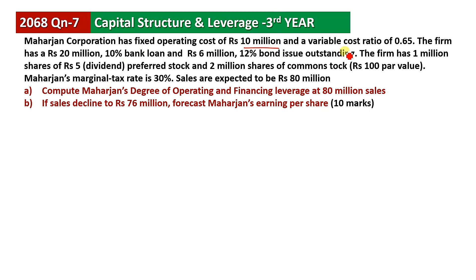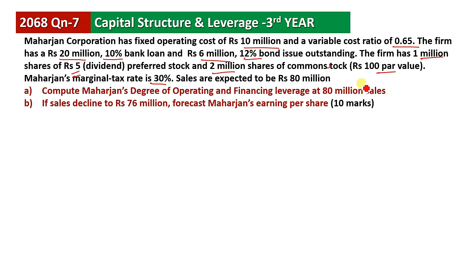The term is 10 million dollars, the bond is 10%. The bond is 5 million at 12%. For the preferred stock, we will give it 1 million. For the dividend, we will give the dividend. For the common stock, we will give it 2 million. The tax is 30%, and expected sales is 80 million.